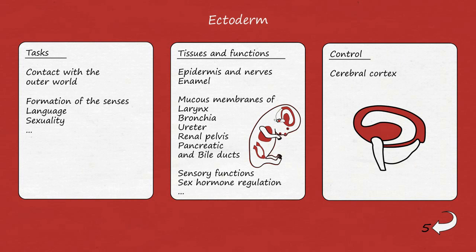Why this lengthy excursion to the embryonic germ layers and the early development of the child in the womb? Because all tissues of one germ layer behave the same within their respective SBS.